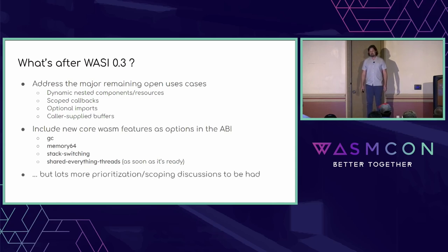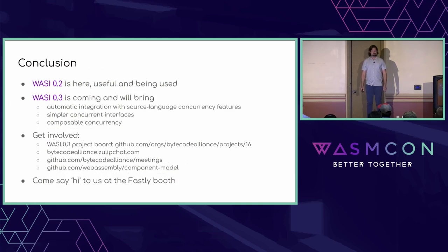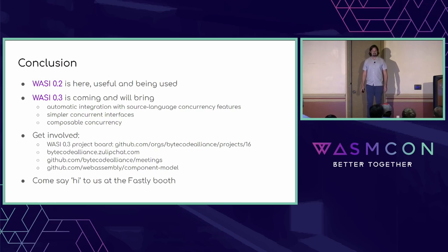There are lots more prioritization and scoping discussions to be had, so participate in those. In conclusion: WASI 0.2 is here, useful, and being used. WASI 0.3 is coming and will bring automatic integration with source language concurrency features, composable concurrency, and simpler concurrent interfaces. If this is exciting and you want to get involved, check out the WASI 0.3 project board, chat in the ByteCode Alliance Zulip chats, or join any ByteCode Alliance meetings — you don't have to be an official member. Engage in the WebAssembly component model repo for design and spec discussions. Come say hi at the Fastly booth and talk about building the future of WASI tooling together.